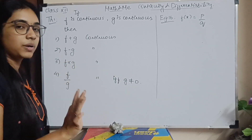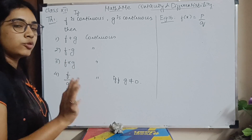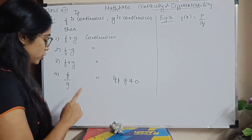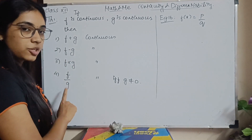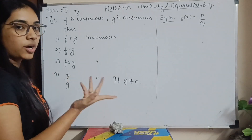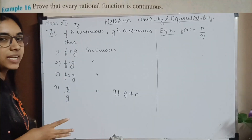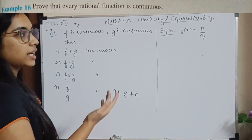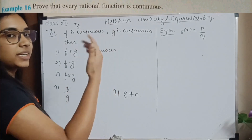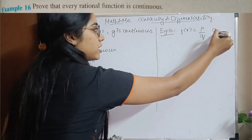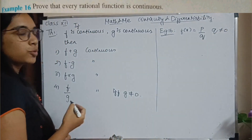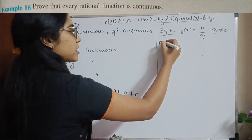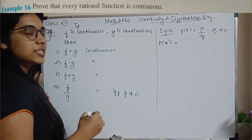You have to know that 1 divided by 0 is equal to infinity, but more importantly, the denominator should never be 0 — it is not defined. Example 16: you have to prove that a rational function, which has a numerator and a denominator where the denominator is not equal to 0, is continuous.